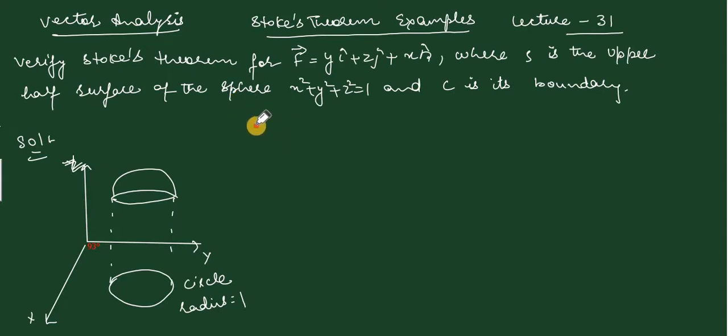Now, we have verified Stokes theorem. By Stokes theorem, what does it state? Double integral over S of curl f vector dot dS equals to line integral over C of f vector dot dr.